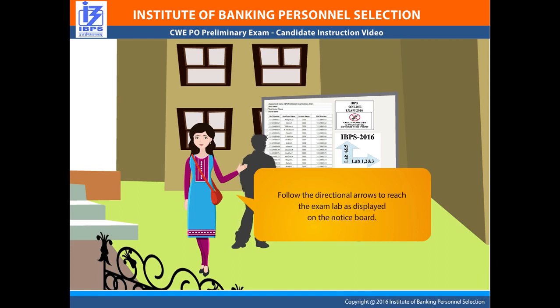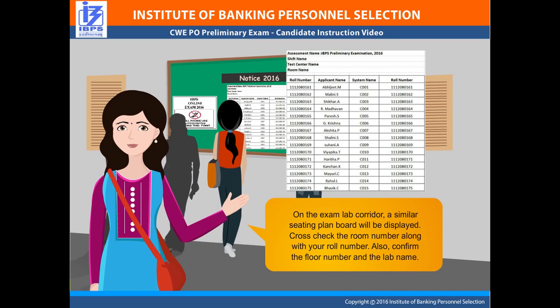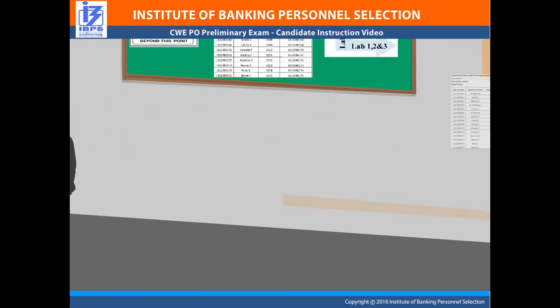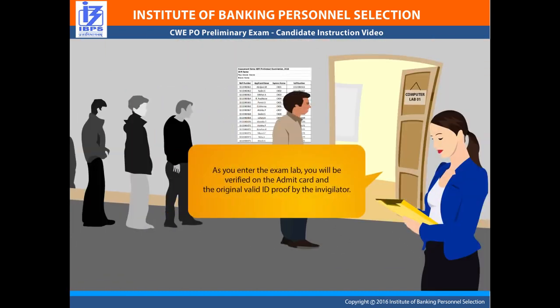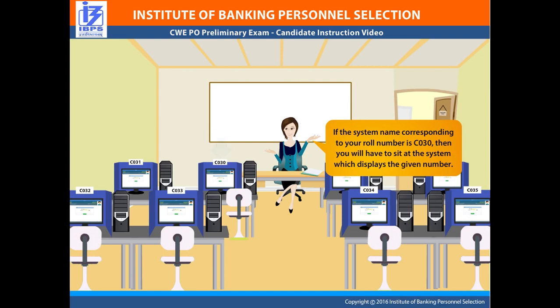Follow the directional arrows to reach the exam lab as displayed on the notice board. On the exam lab corridor, a similar seating plan board will be displayed. Cross-check the room number along with your roll number, and also confirm the floor number and the lab name. As you enter the exam lab, you will be verified on the admit card and the original valid ID proof by the invigilator. Make sure that you sit at the assigned desk as per your roll number. For example, if the system name corresponding to your roll number is C030, then you will have to sit at the system which displays that number.